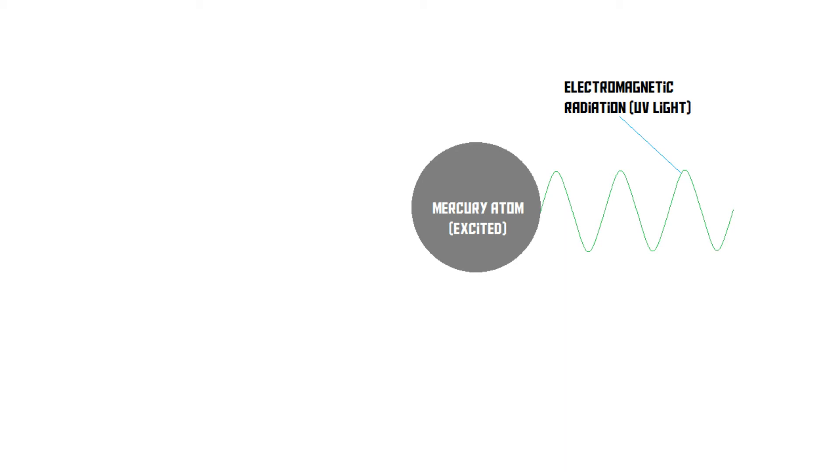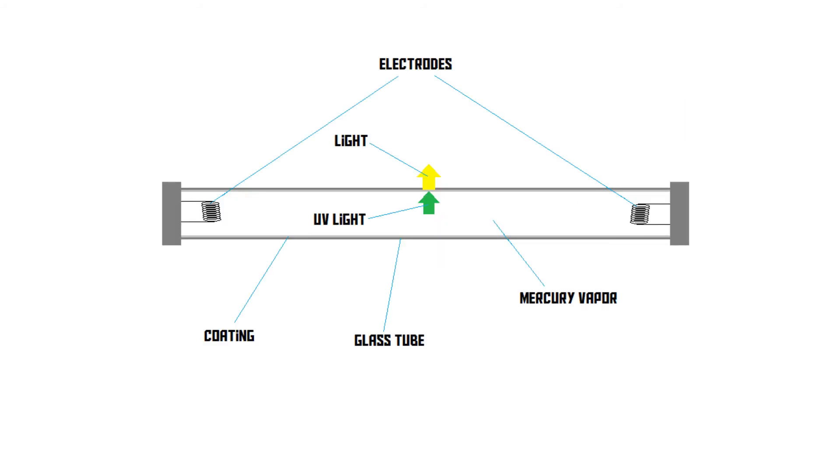And sometimes that's great, because for some reason you might need UV light, but we cannot use it to illuminate a room. This is where the special coating on the glass tube comes in. The coating absorbs the UV light and re-emits it as visible light.